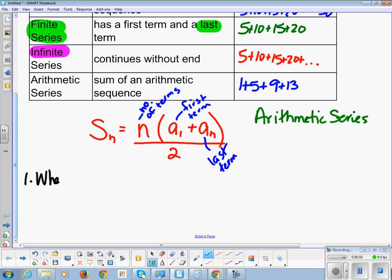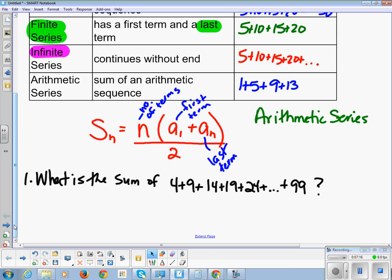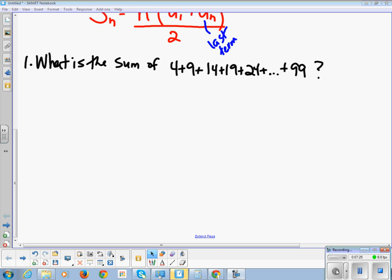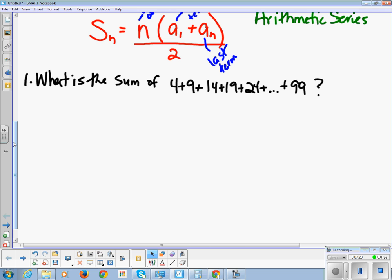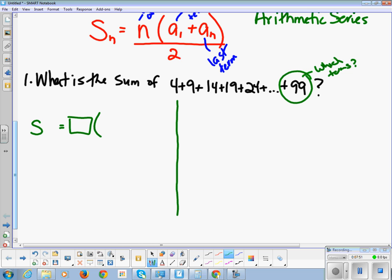So what is the sum of 4 plus 9 plus 14 plus 19 plus 24 plus dot dot dot because I'm too lazy to write all of them plus 99? Question mark. Okay. So this is two parts. Let me show you the first part. The first part I have to do is figure out which term is this. Which term? I don't know.